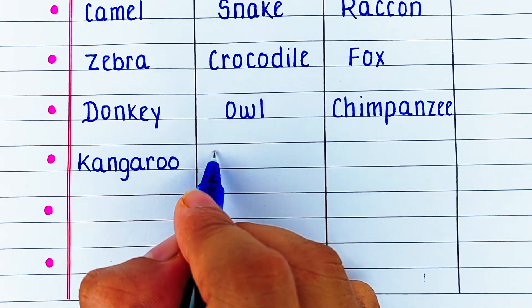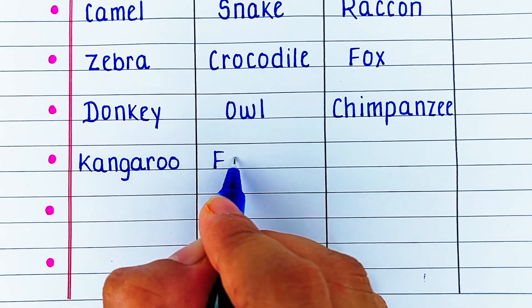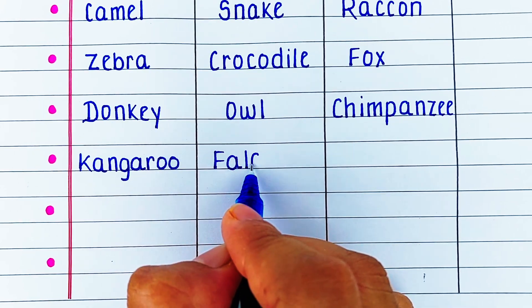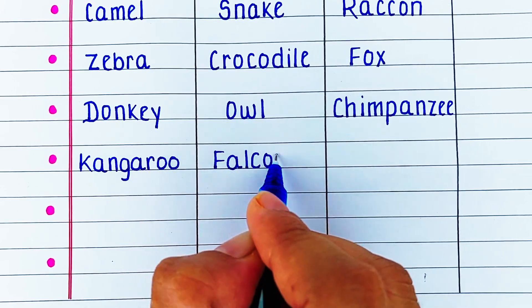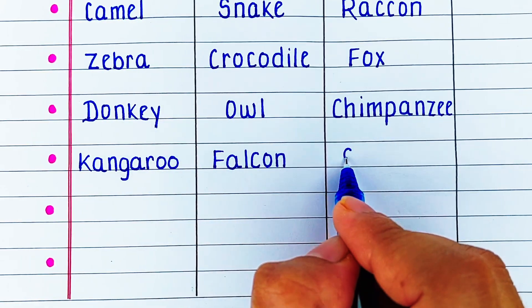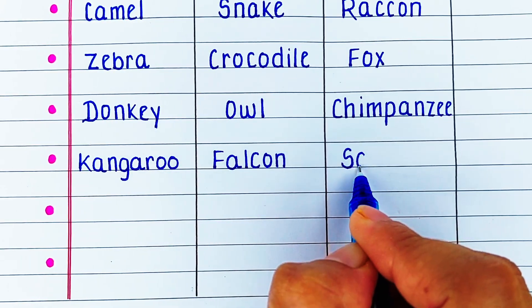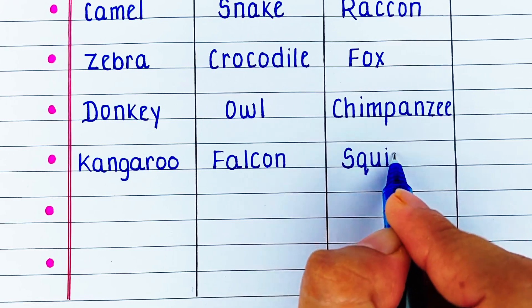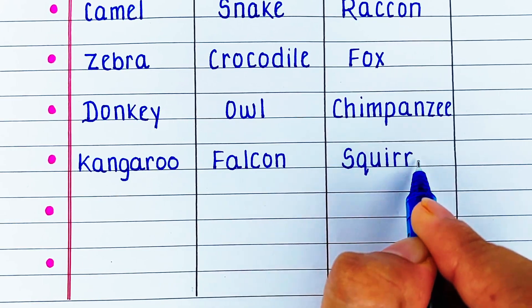Next herbivore in our list is kangaroo. Carnivore is falcon. And omnivore is squirrel.